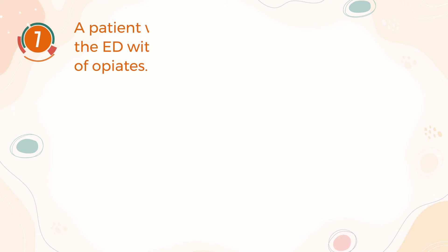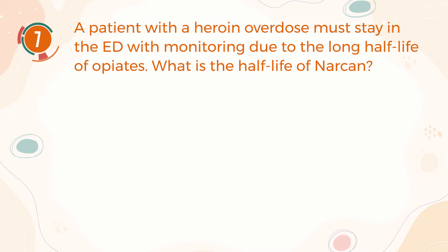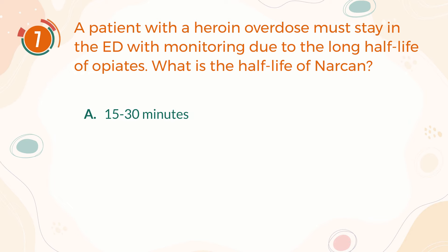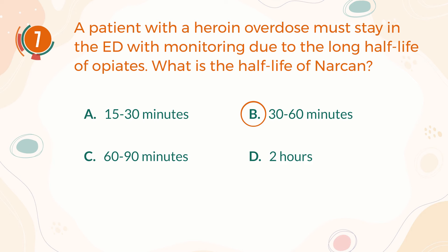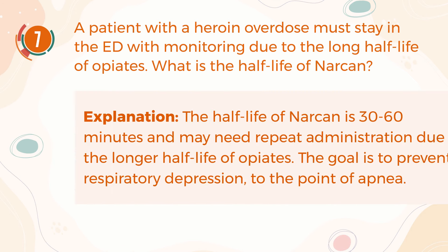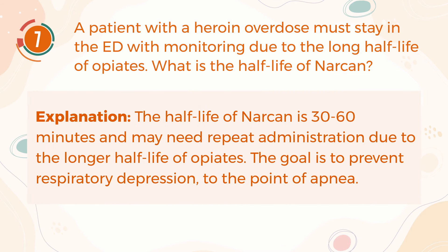Number 7. A patient with a heroin overdose must stay in the emergency department with monitoring due to the long half-life of opiates. What is the half-life of Narcan? A, 15–30 minutes. B, 30–60 minutes. C, 60–90 minutes. D, 2 hours. The correct answer is B, 30–60 minutes. The half-life of Narcan is 30–60 minutes and may need repeat administration due to the longer half-life of opiates. The goal is to prevent respiratory depression to the point of apnea.